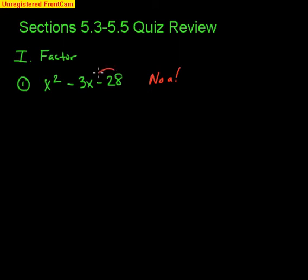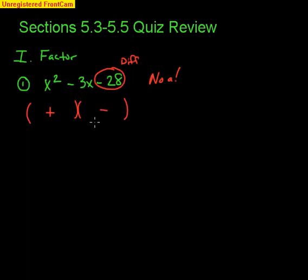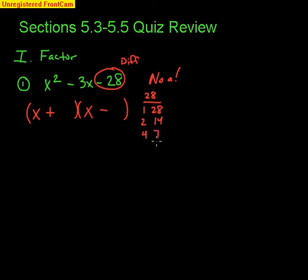We're going to circle the c and say it's negative. Negative means different signs. So when I draw my two parentheses, I put one plus and one minus. To get x squared we need x and x — no space because there's no a. Now we look at the factors of 28: 1 and 28, 2 and 14, 4 and 7.